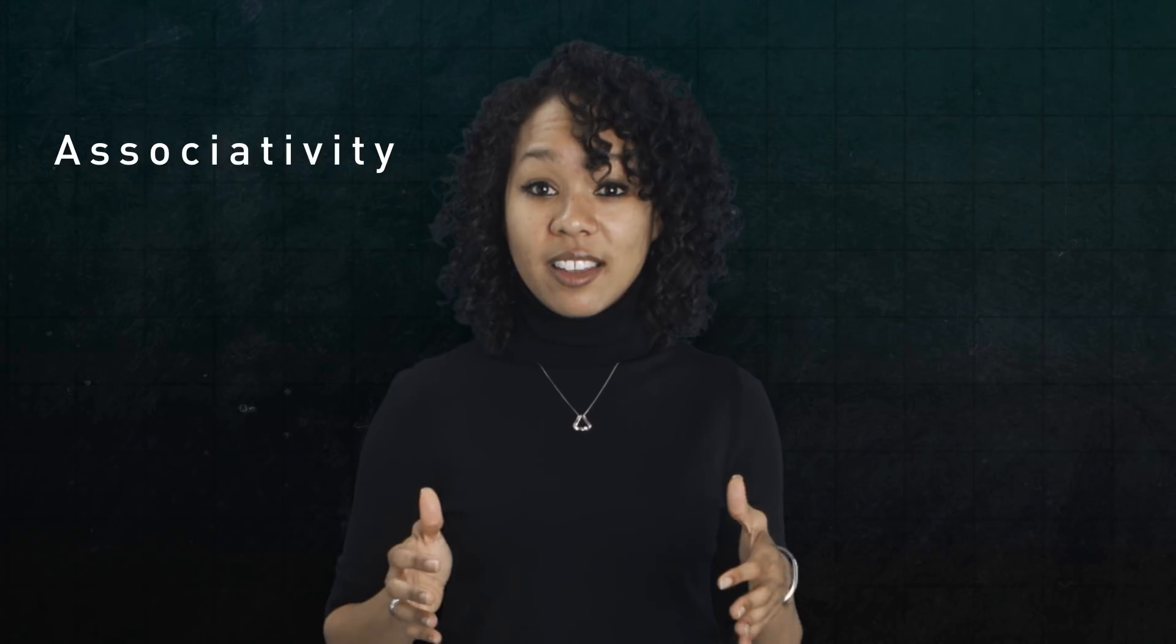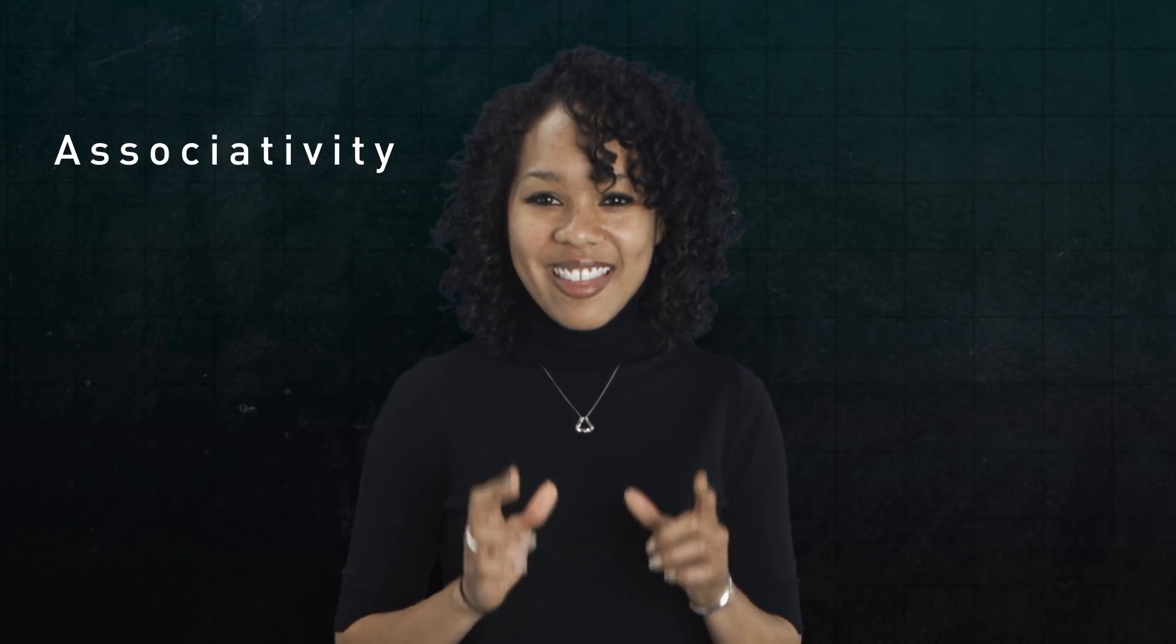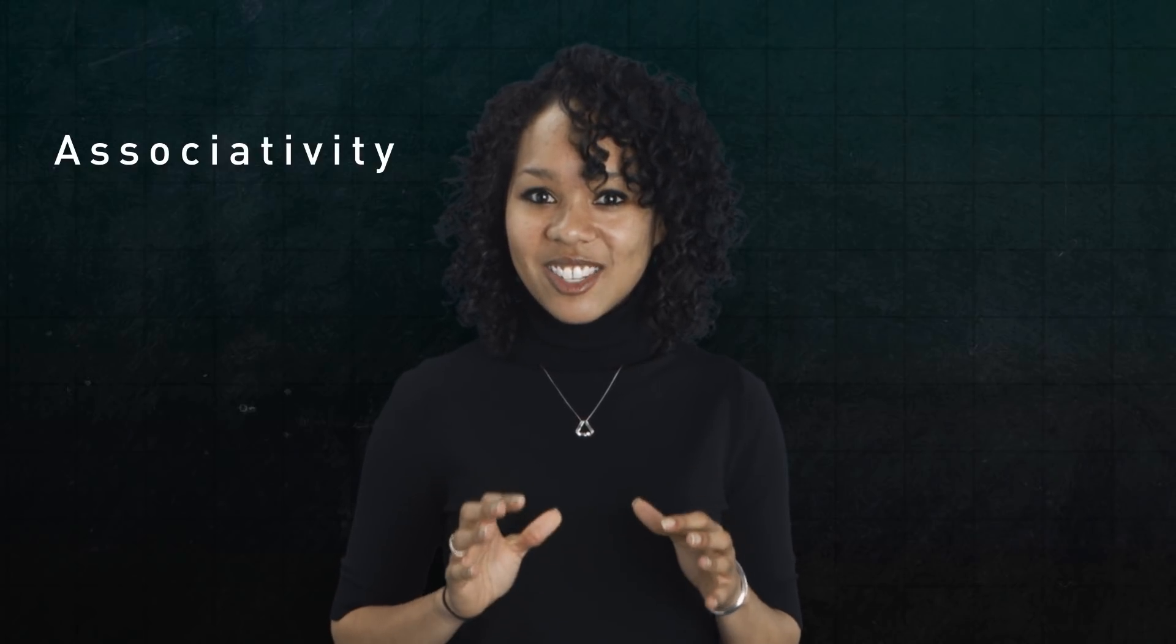Let's say you want to multiply three or more numbers together. Well, where you put the parentheses doesn't matter. This property is called associativity. But what happens if you multiply things that aren't numbers? And what happens if that multiplication is not associative?